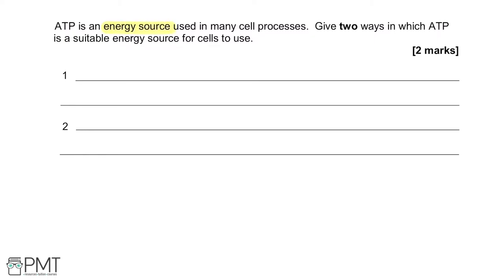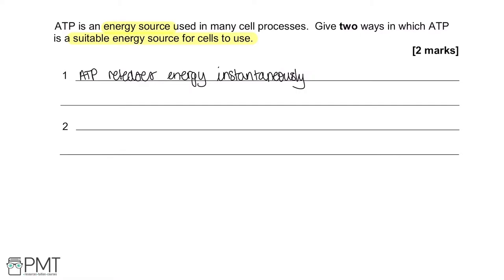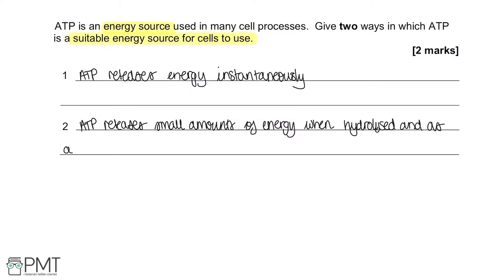ATP is an energy source used by many cell processes. Give two ways in which ATP is a suitable energy source for cells to use. ATP is called the universal energy carrier because it's used in almost all reactions in all organisms. One reason is that ATP releases energy instantaneously. Another reason is that ATP releases relatively small amounts of energy each time it's required, and little energy is lost as heat.